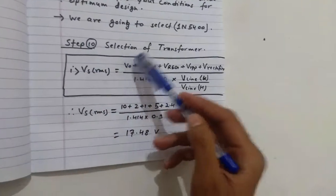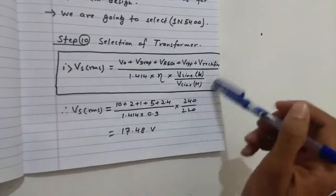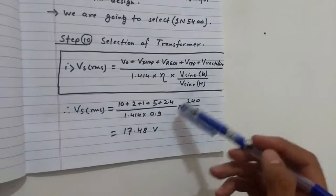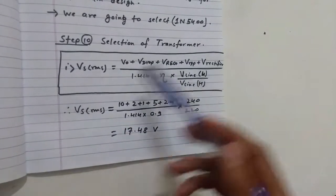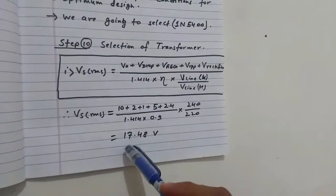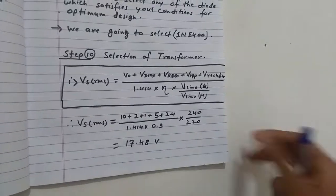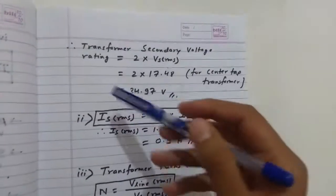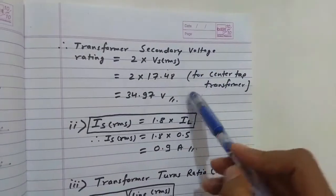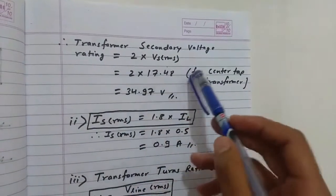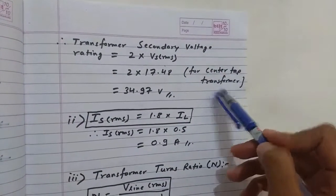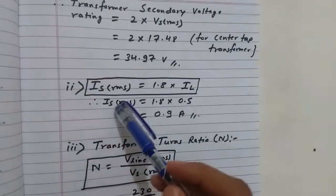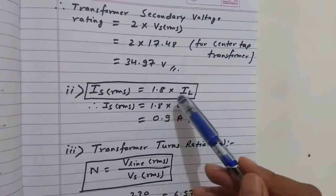The next step is selection of the transformer. The first parameter is V_s(RMS): substituting all values gives V_s(RMS) = 17.48 V; for a center-tap transformer we multiply by 2, giving 34.97 V. The secondary RMS current I_s(RMS) = 1.8 × I_load for a center-tap transformer = 0.9 A.